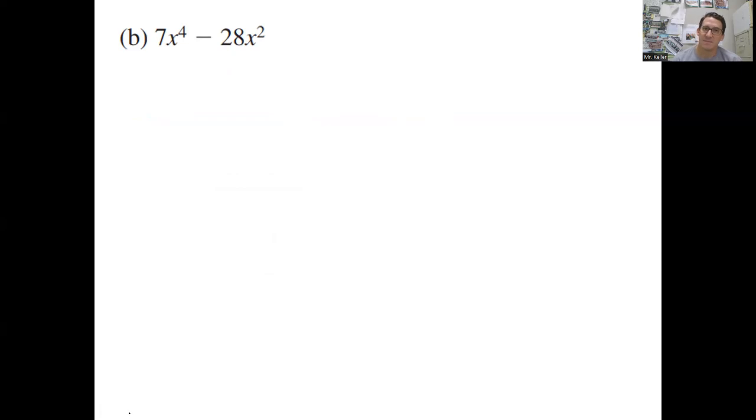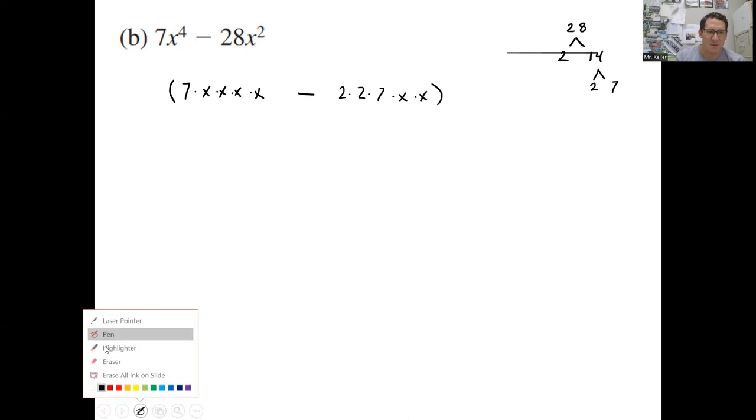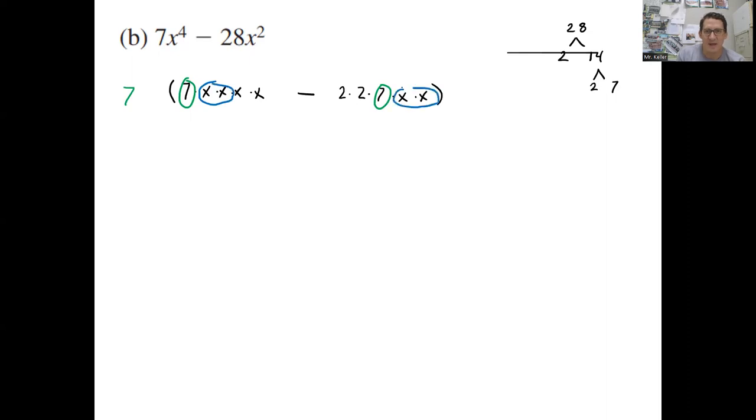Let's do another example. Hopefully this one has some factoring we can do. Again, I'm going to expand this out. 7 times x to the 4th is 1, 2, 3, 4 x's minus 28. 28 would be 2 times 14, and then 14 is 2 times 7. So the 28 is 2 times 2 times 7 times x squared, x times x. So look for what they have in common. Each term has a 7 in common, and then they have two x's that they have in common. So we can take out two x's both.